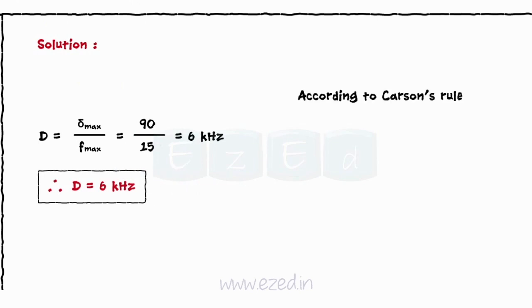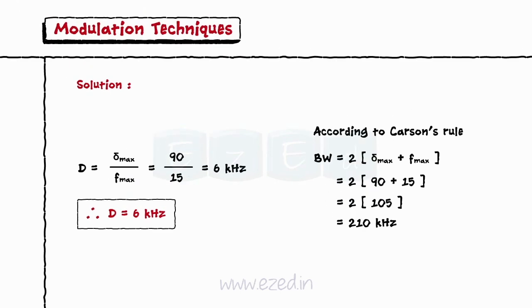According to Carson's rule, bandwidth equals 2 into max deviation plus max frequency. Substituting the values, we get bandwidth equals 210 kHz.